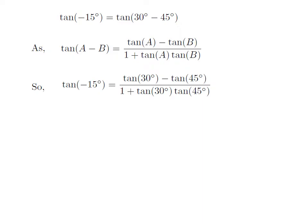To find tangent of minus 15 degrees, we have to replace tan A with tangent of 30 degrees and tan B with tangent of 45 degrees in the above formula. So tangent of minus 15 degrees, which equals tangent of 30 degrees minus 45 degrees, is equal to tangent of 30 degrees minus tangent of 45 degrees upon 1 plus tangent of 30 degrees into tangent of 45 degrees.